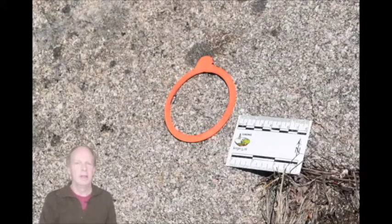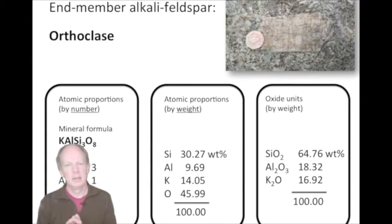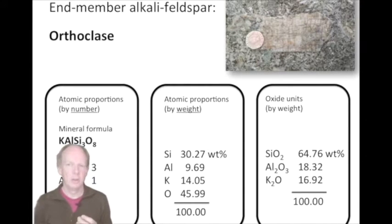There are three ways you'll find mineral composition represented intermittently in literature, studies, and reports. The first one is probably the most familiar: representing mineral composition in terms of a mineral formula. For orthoclase, its end-member composition is KAlSi₃O₈ — one potassium, one aluminium, three silicons, eight oxygens. That is the composition in terms of numbers of atoms per unit of this mineral. Another way of representing that same composition is in terms of the weight of those atoms.